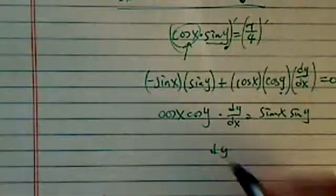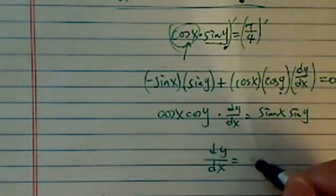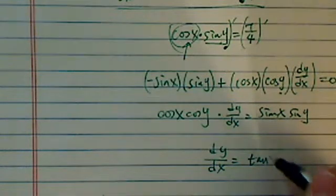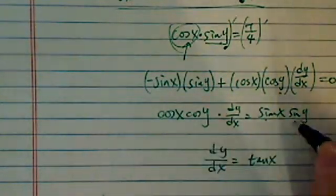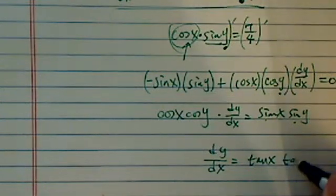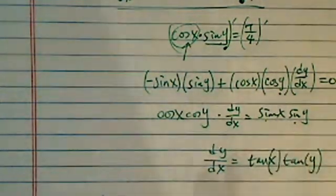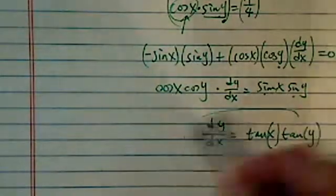So obviously, one more step: dy/dx is equal to — dividing over — you have tangent of x, because sine divided by cosine gives tangent, and sine y divided by cosine y gives tangent y. So dy/dx equals tangent x times tangent y. That's the derivative, and this is how you use implicit differentiation.